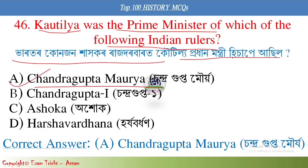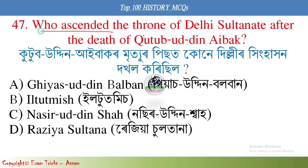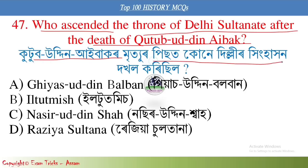Next question: Who ascended the throne of the Delhi Sultanate after the death of Qutbuddin Aibak? After Qutbuddin Aibak's death, Iltutmish took control of the Delhi Sultanate, defeating Aram Shah.